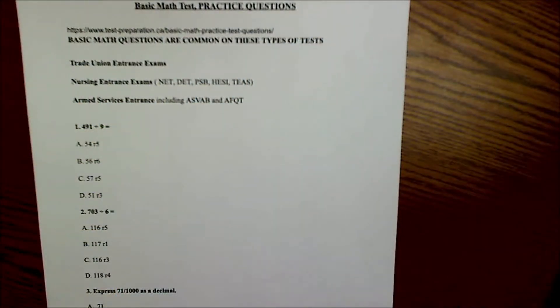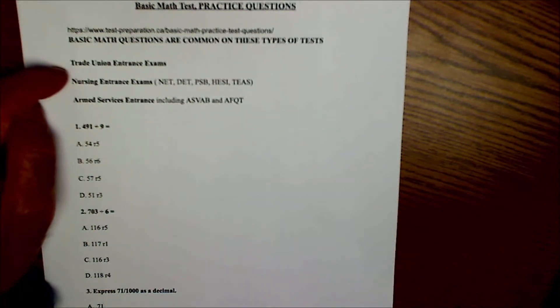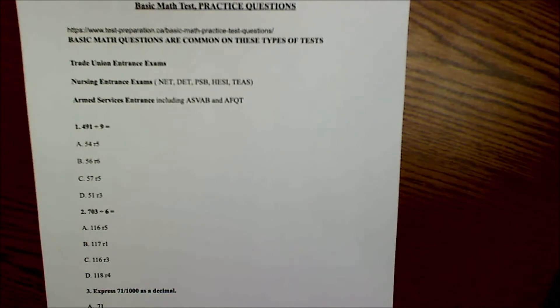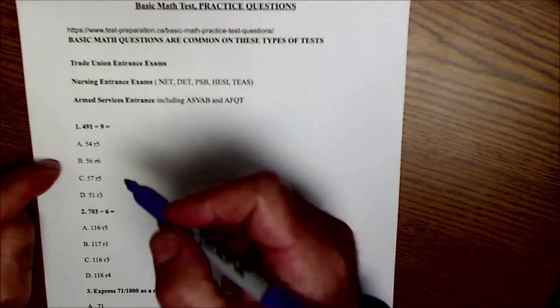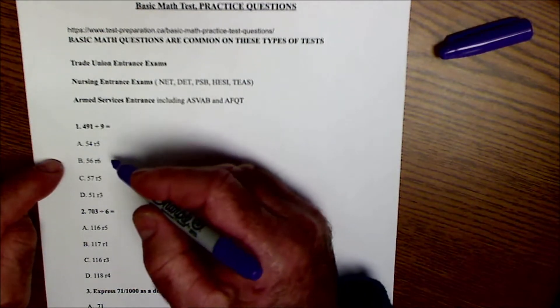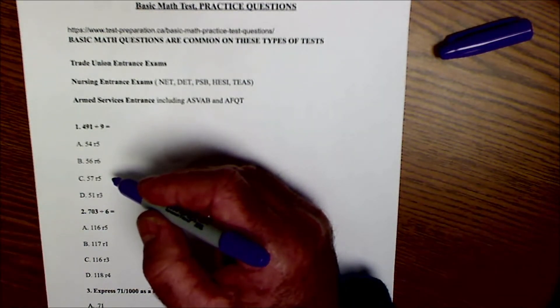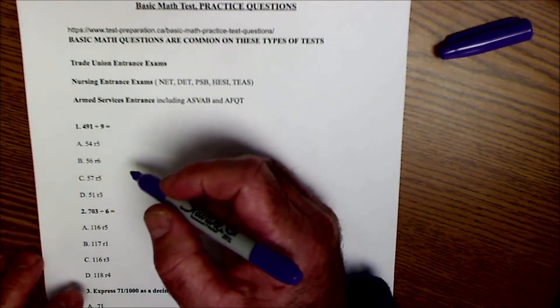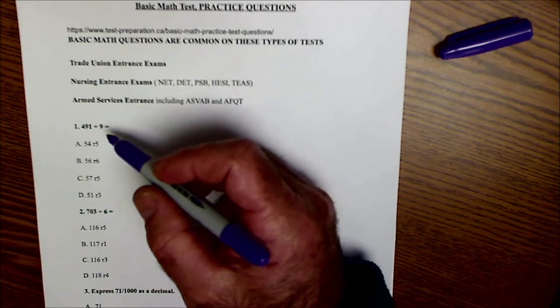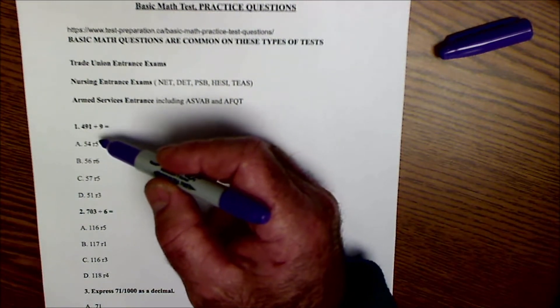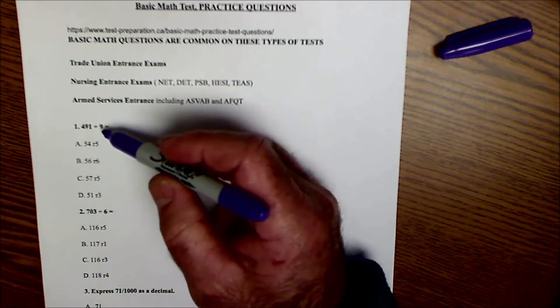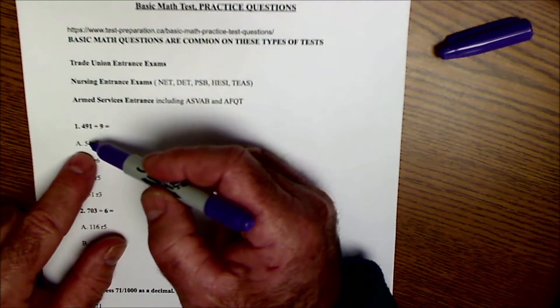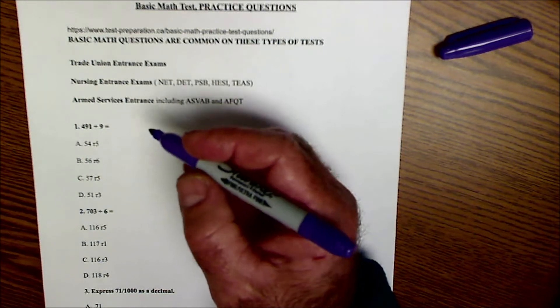Basic math test, it's really kind of the standard for any trade union entrance exam, nursing entrance exam, armed services exam. A couple tips and tricks: one is you certainly want to mark it up as much as you possibly can so if you move on and don't finish a problem you could go back and check your work or continue on where you left off. The hardest problem has the same weight as the easiest problem, so don't make any careless mistakes. The other thing I do is before I even start, I look at the problem and then I look at the answers. Just by doing that I can tell I'm looking for a division answer with a remainder, that's what that R stands for.